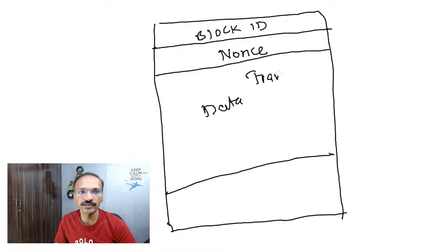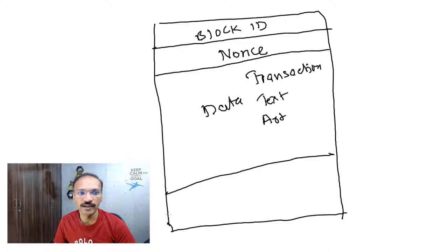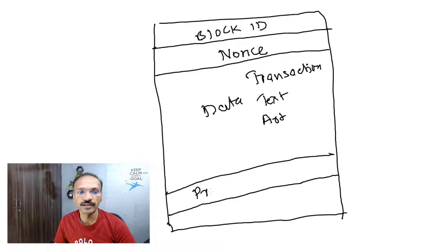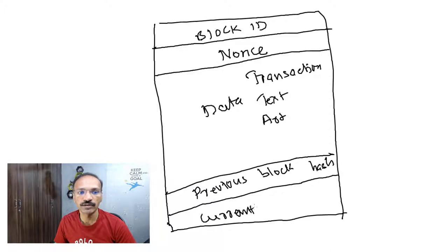Then we have the data — you can store any data here, it could be a transaction, some text, artwork, it can be anything. Followed by those two components, the fourth component is called the previous block hash, and the fifth is the current block hash.